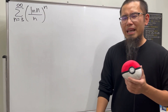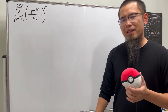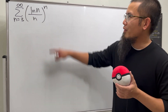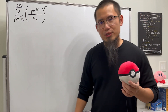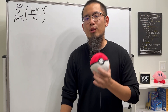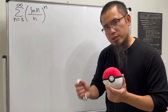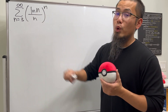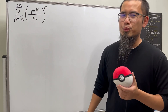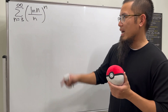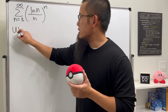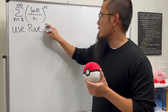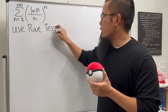For the third series, we have (ln(n)/n) raised to the nth power. I think this is actually easier than the previous one because of the nth power — it is a good idea to use the root test, since the nth root and the nth power will cancel and the rest is straightforward.